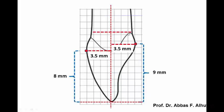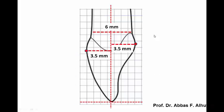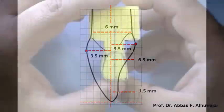The width of the root is 6 mm. The slope of the incisal edge ends about 1.5 mm lingually, while the end of the cingulum ends at 6.5 mm from the incisal edge. In between these two points a concavity is shown.